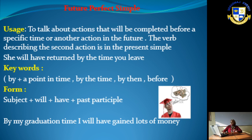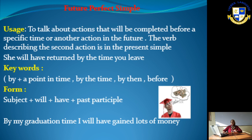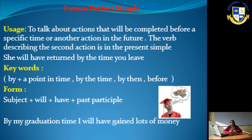The keywords for Future Perfect Simple are: 'by + a point in time,' 'by the time,' 'by then,' 'before,' 'by this time tomorrow,' or 'next week.' The form is: subject + will + have + past participle. Note: you cannot say 'will has' — 'will' must be followed by the verb stem, so it is always 'will have.'